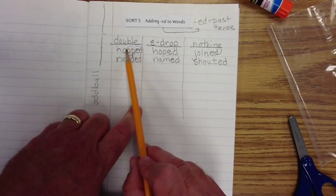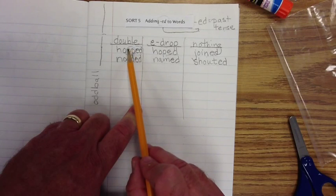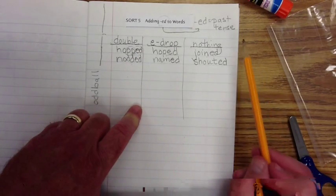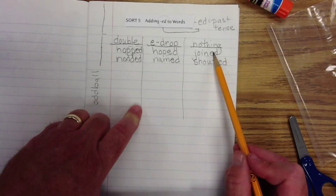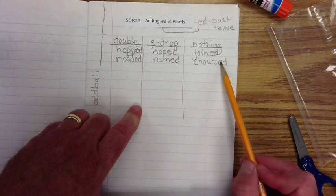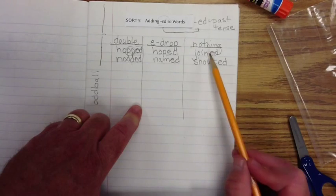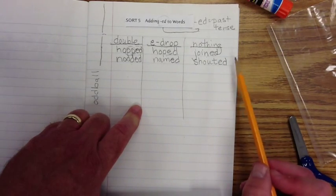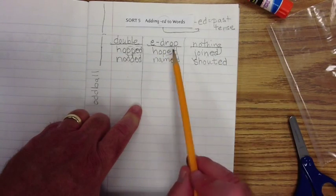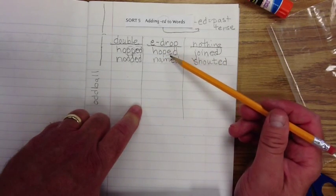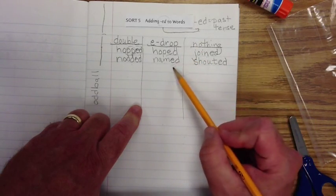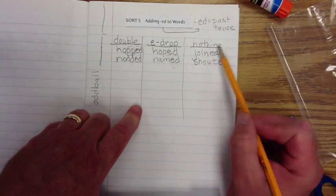You're going to recognize that some words have double consonants. In order for that to happen, we had to add the consonant and then add ED. With the NOTHING category, we're simply adding ED — we don't see any double consonants before the ED. ED means past tense. And with the E-drop, we have to get rid of the E, like in HOPE or NAME, and then add ED to the end. All of these are past tense.